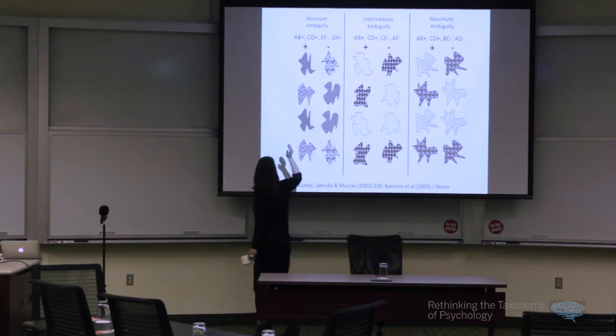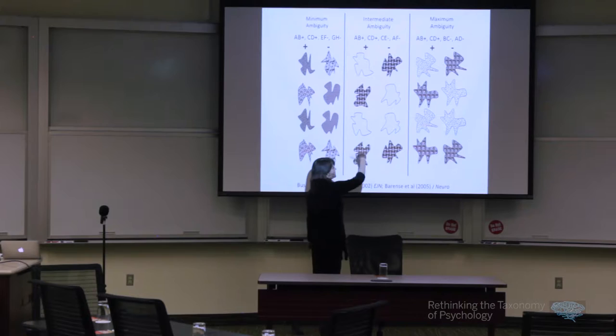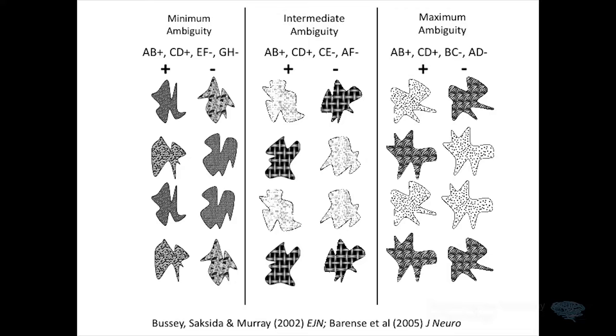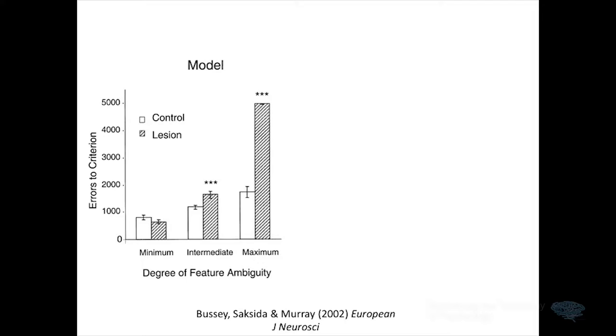We had a control condition — a minimum ambiguity condition — where you can solve the problem on the basis of shape or fill pattern on its own, so there's no ambiguity. And just for fun we had an intermediate condition where half of the features were ambiguous and half were not. Notice this is a visual discrimination task; there's no overt declarative memory component here. The animal has to remember the rule, but that wouldn't typically be defined as declarative memory accessible to conscious awareness. So according to the view at that time, we should not have seen any impairment in these animals after damage to perirhinal cortex, because that's a structure involved in memory.